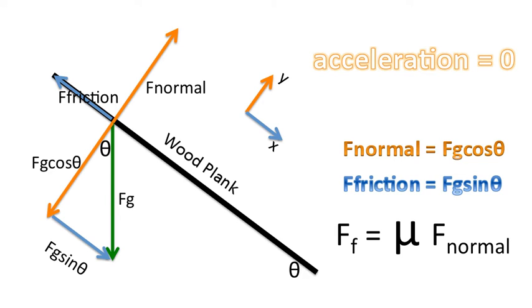Now recall that the force of friction is equal to the static coefficient of friction multiplied by the normal force. So if you wish, you could substitute for the force of friction this expression, fg sin theta. And for the normal force, you can substitute fg cos theta. And one can show that the static coefficient of friction is equal to tan theta.